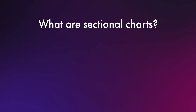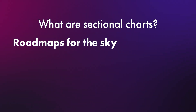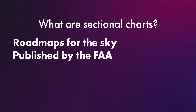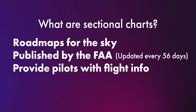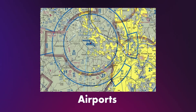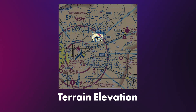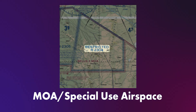So what are sectional charts? You can think of sectional charts as road maps for the sky. They're published by the FAA and updated every 56 days, so pilots have the most accurate current information possible. They show you the controlled and uncontrolled airspace, airports and their features, terrain elevation, obstacles like towers and wind turbines, and also some special use airspace like military zones and restricted areas.